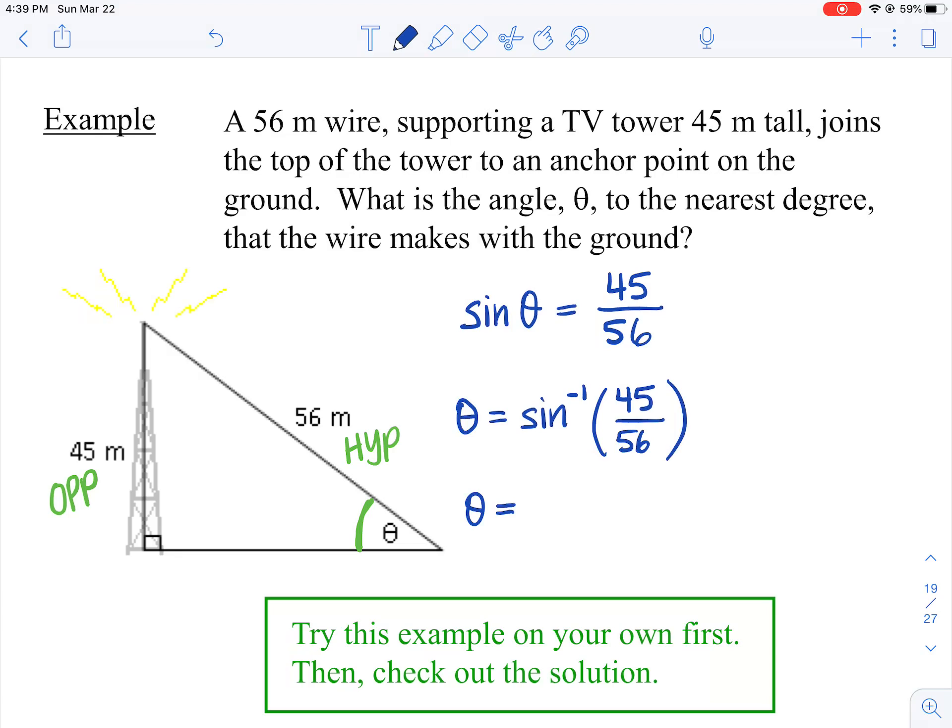Okay, so plop that guy into your calculator. And we're rounding to the nearest degree, so nearest whole number. So that'll be 53 degrees.